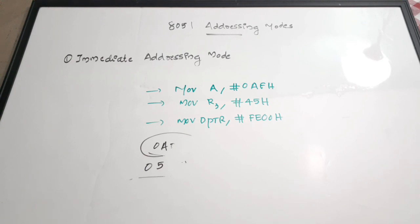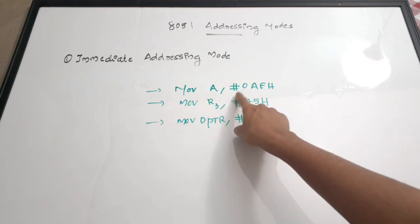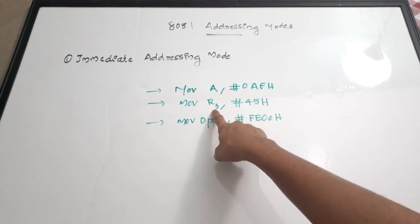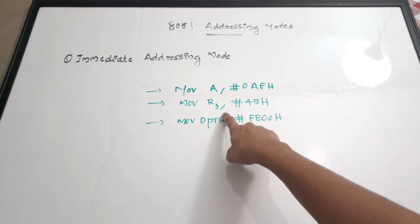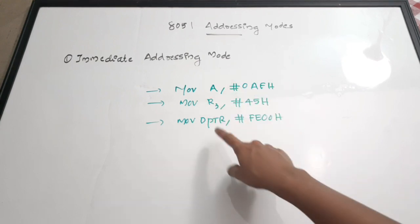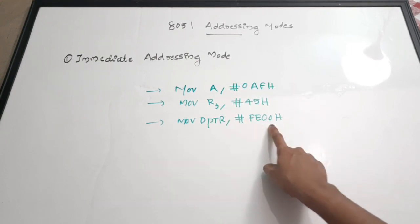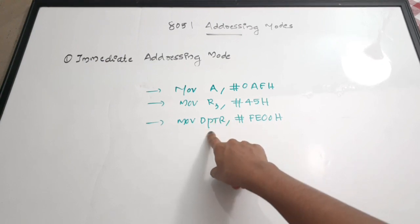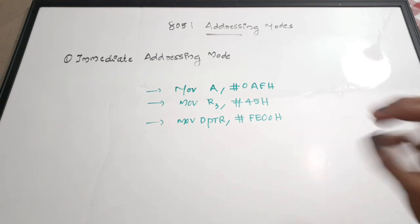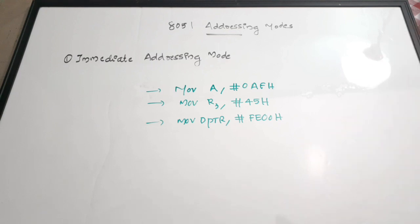In immediate addressing mode, the data is provided with the instruction itself. For example: MOV A, #0AFh means this data is moved to the accumulator; MOV R3, #45h passes data to the R3 register; and we can also pass 16-bit data to the data pointer register. These types of instructions are called immediate addressing mode — the data is directly given along with the instruction.